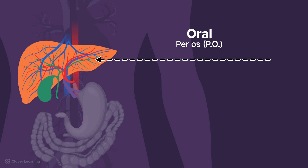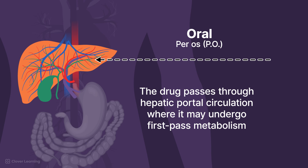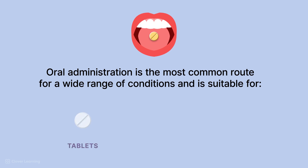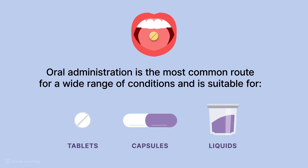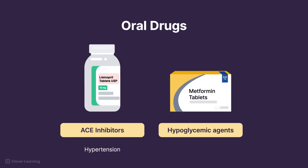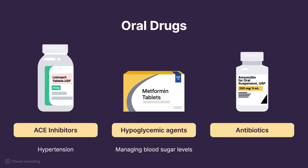Once ingested, the drug undergoes absorption primarily in the small intestine. Before entering the bloodstream, it passes through the hepatic portal circulation, the venous system that returns blood from the digestive tract and spleen to the liver, where it may undergo first-pass metabolism by the liver before ultimately entering the bloodstream. Oral administration is the most common route for a wide range of conditions due to its convenience and patient compliance. It's suitable for solid forms like tablets and capsules, as well as liquids like syrups. Examples of oral medications are ACE inhibitors and beta blockers for hypertension, oral hypoglycemic agents like metformin for blood sugar management, and antibiotics like amoxicillin for various bacterial infections.